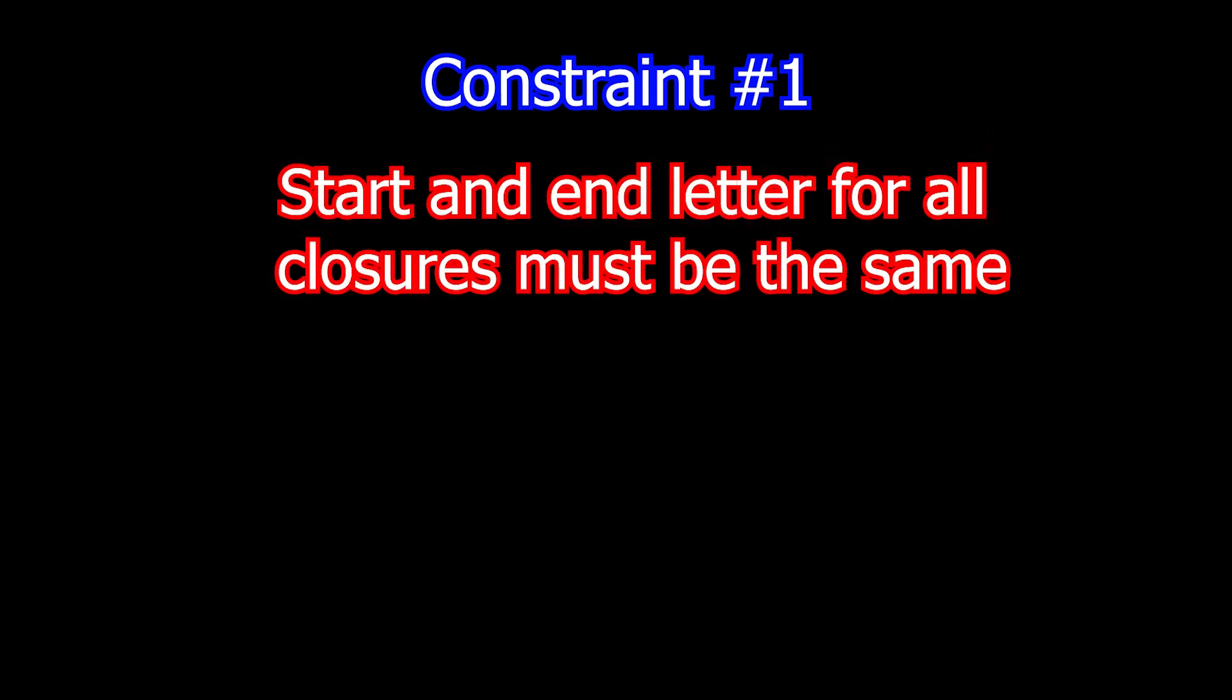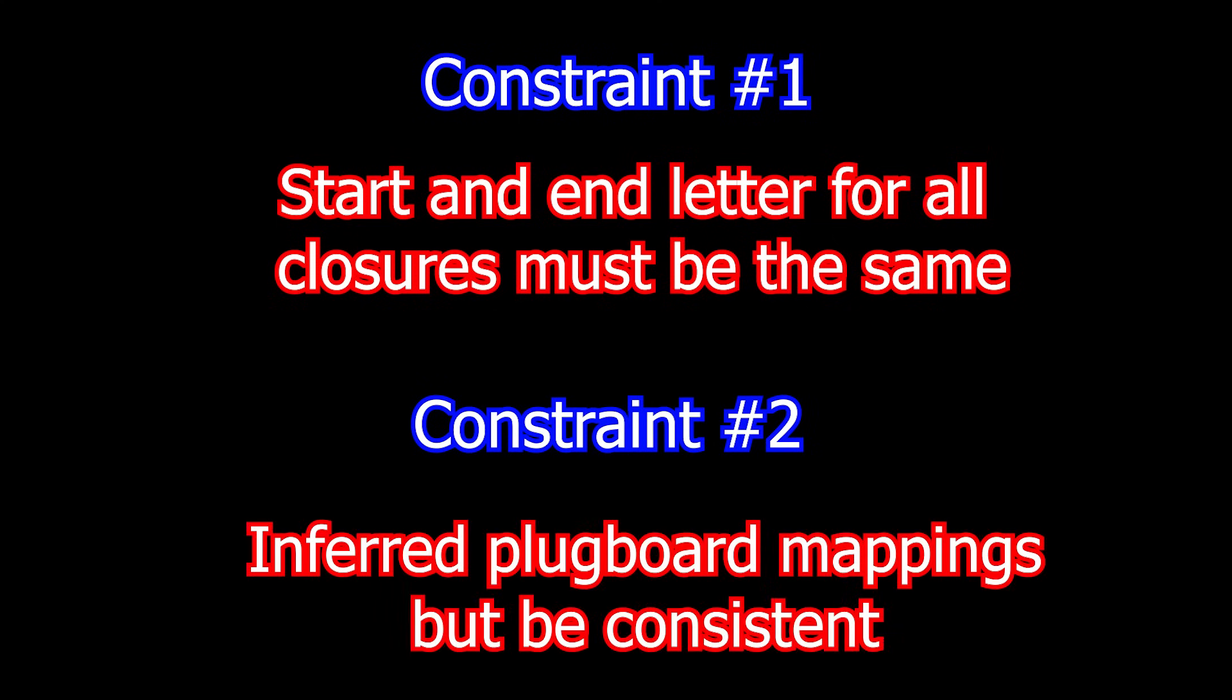Constraint 1, the start and end letter for all the closures must be the same. This is how the basic bomb worked. But now I'm going to add a second constraint. The inferred plugboard mappings must be consistent within a closure loop and also between the various closure loops. This is how the enhanced bomb worked.